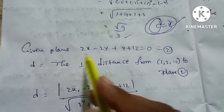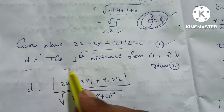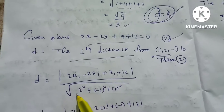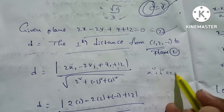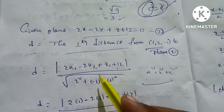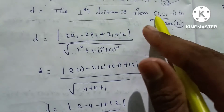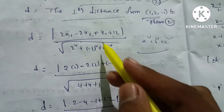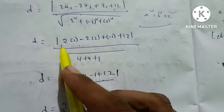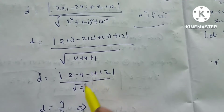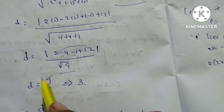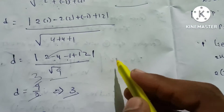Now we find the perpendicular distance D from center (1, 2, minus 1) to the given plane 2x minus 2y plus z plus 12 equal to 0. Using the formula D equals |2(1) minus 2(2) plus (minus 1) plus 12| divided by square root of 4 plus 4 plus 1, which gives |2 minus 4 minus 1 plus 12| divided by 3, equals 9 divided by 3, so D equals 3.